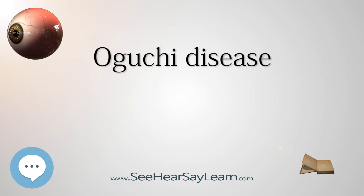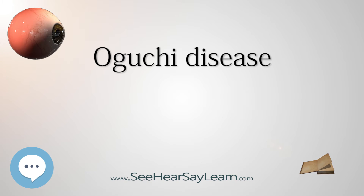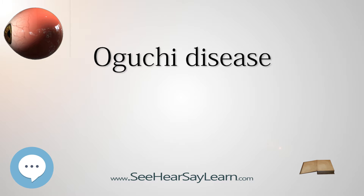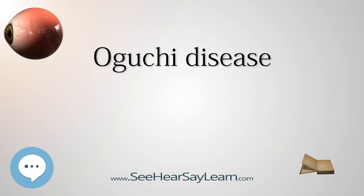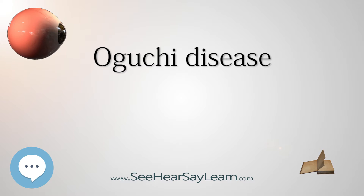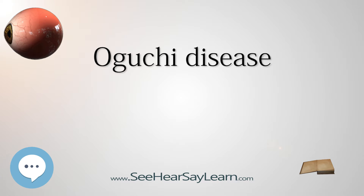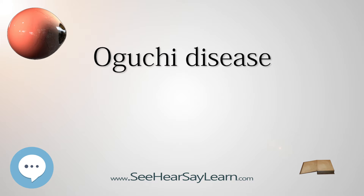Diagnosis: Oguchi disease presents with non-progressive night blindness since young childhood or birth with normal day vision, but patients frequently claim improvement of light sensitivity when they remain for some time in a darkened environment. On examination, patients have normal visual fields, but the fundus has a diffuse or patchy, silver-gray or golden-yellow metallic sheen, and the retinal vessels stand out in relief against the background.